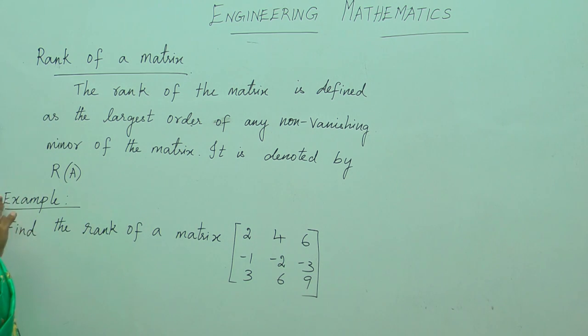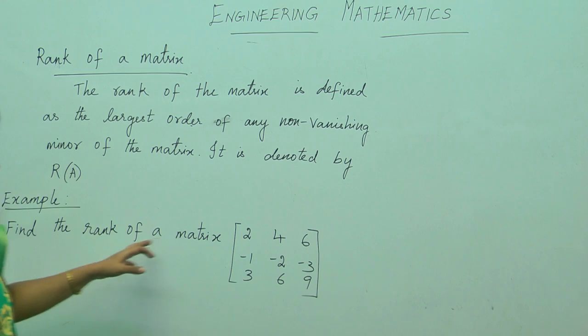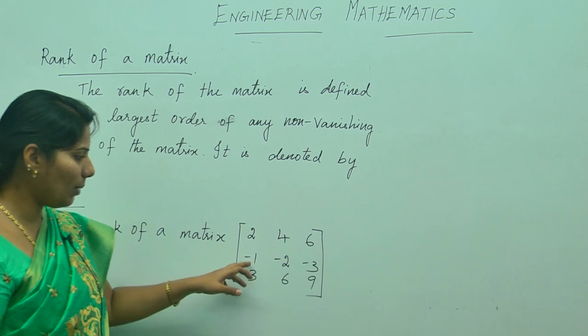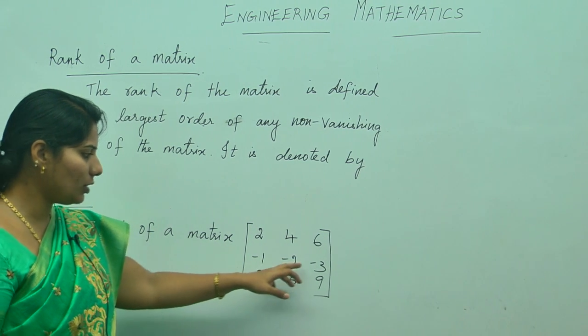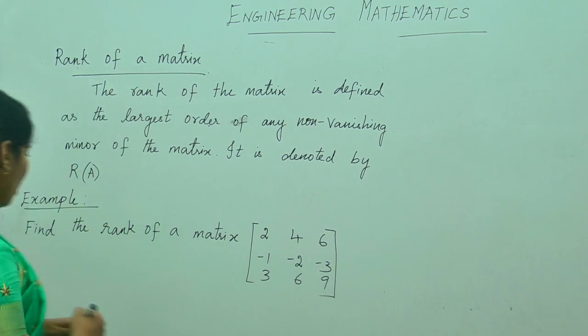So to show with an example: find the rank of the matrix with rows [2, 4, 6], [-1, -2, -3], and [3, 6, 9].